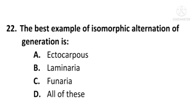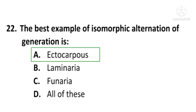Next question: The best example of isomorphic alternation of generation is — A) Ectocarpus, B) Laminaria, C) or all of these. The correct option is A, Ectocarpus. The best example of isomorphic alternation of generation is Ectocarpus; A is the correct option.